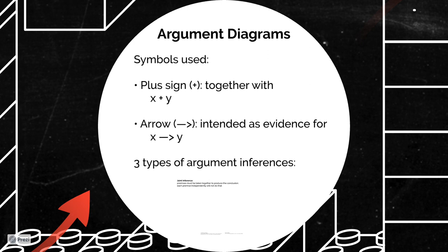Our primary focus in this module is to learn how to use argument diagrams. All diagrams use symbols, but there are two different approaches we might take. One comes in the form of what we call a logical tree, which we will look at later. We begin with what we might call sentence form, where we lay out our symbols flowing from left to right, just as we would in a sentence or a mathematical equation. Both forms of diagram use the arrow symbol to signal that something is intended as evidence for something else. So if we have X with an arrow pointing to Y, that signals X is a premise and Y is the conclusion that follows.